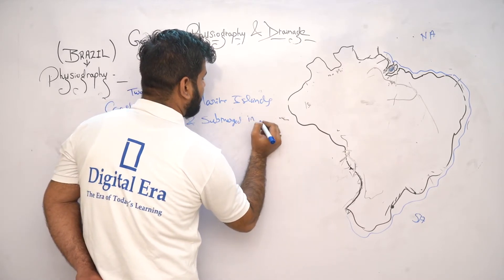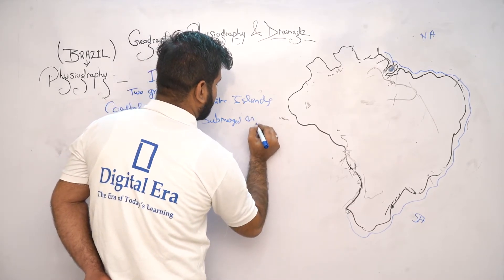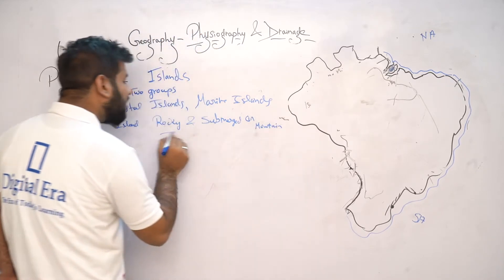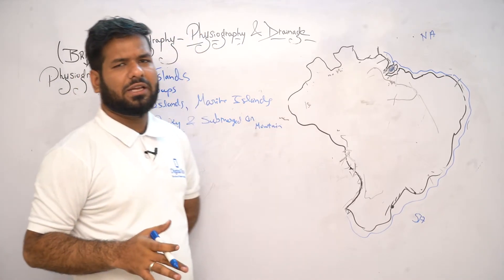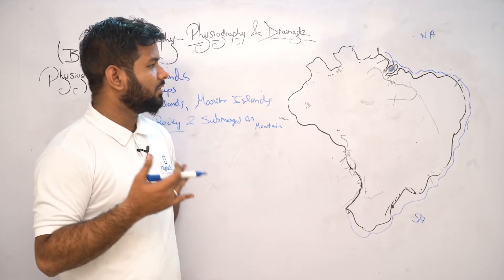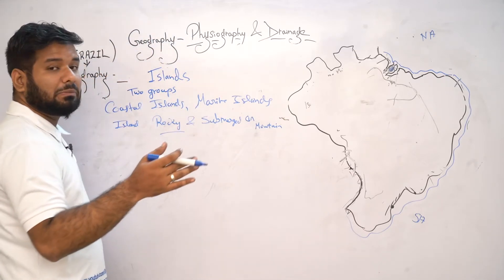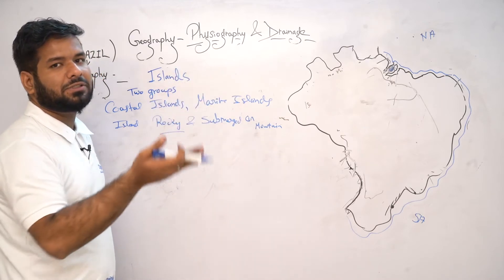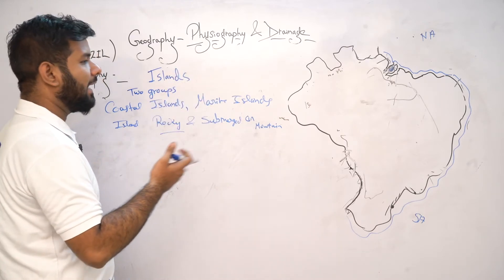Rocky in nature means these islands are made of very large rocks and stones, and submerged on mountain means these islands are situated on top of mountains.